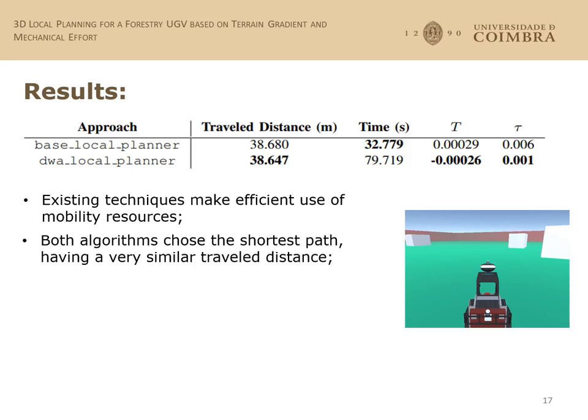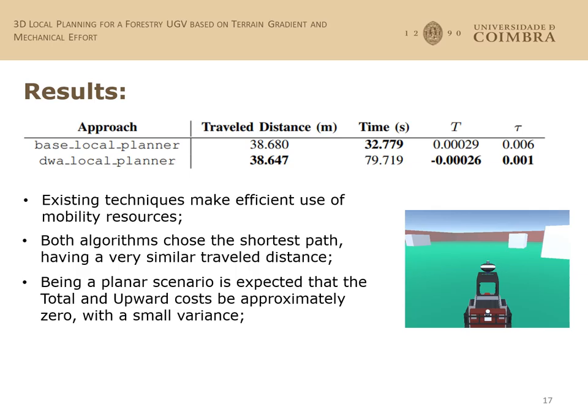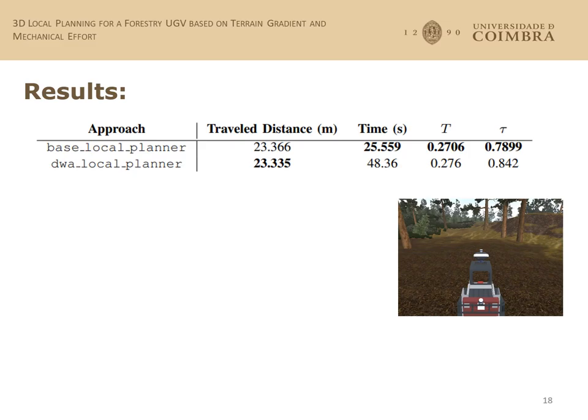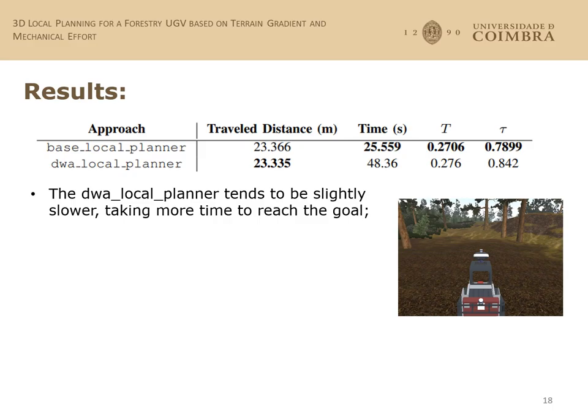For the first scenario, we can conclude three things: existing techniques make efficient use of mobility resources and can go from the initial to a goal point efficiently; both algorithms choose the shortest path, having very similar travelling distances; and being a planar scenario, it is expected that the upward and total cost are close to zero, with small variance. In the table, we can see that DWA has a negative total cost, meaning the Z value went down more than it went up, but in this case it is not significant.